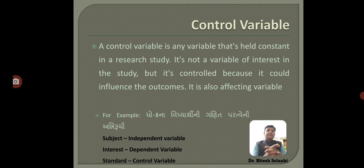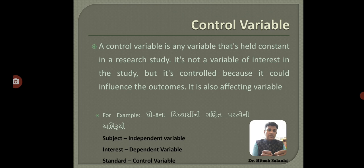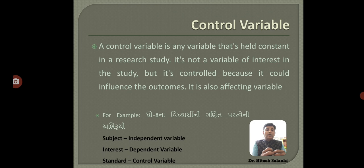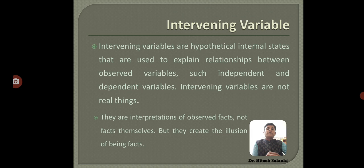The next variable is the control variable. A control variable is any variable that is a constant in a research study. It is not a variable of interest in the study, but it is controlled because it could influence the outcome. It is also an affecting variable. For example, consider standard 8th students who want to know mathematics — here the subject is the independent variable, the interest of the subject is also an independent variable, and the standard is the control variable.